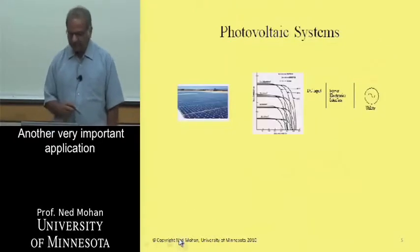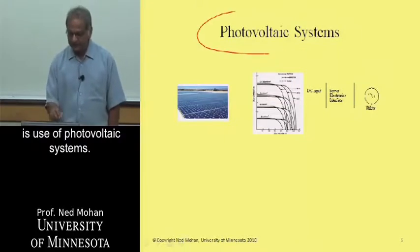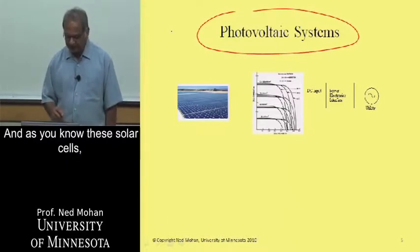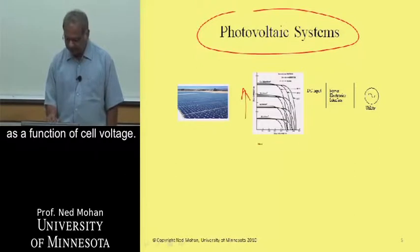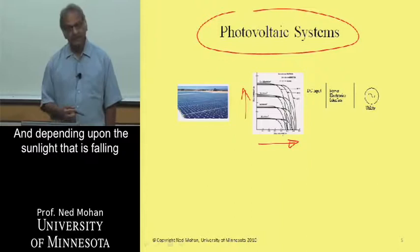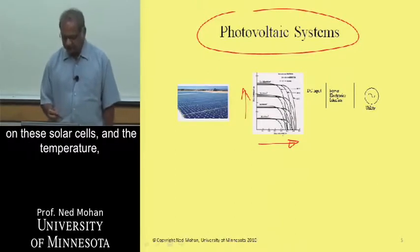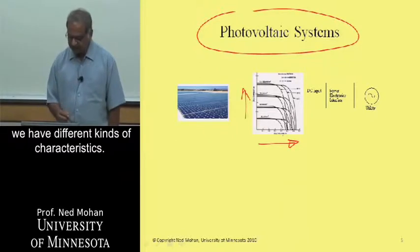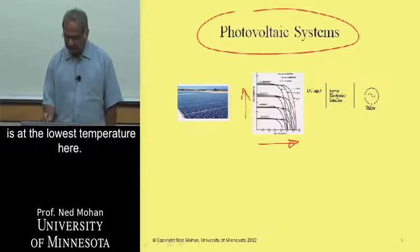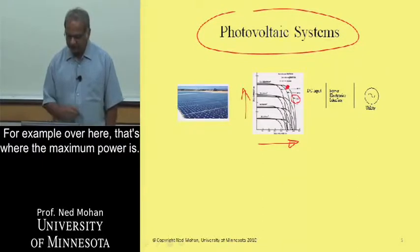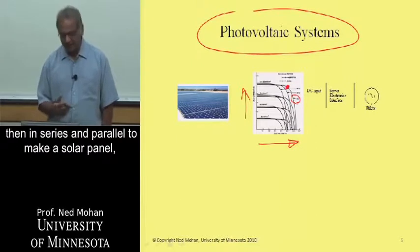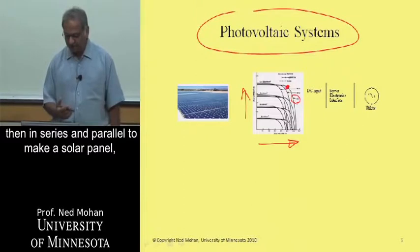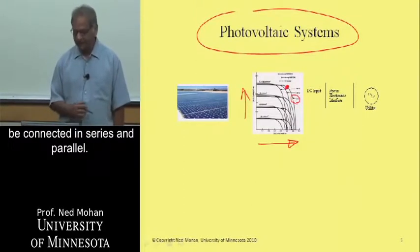Another very important application for renewables-based electric generation is photovoltaic systems. These solar cells produce a DC output. The cell current is plotted as a function of cell voltage, and depending upon the sunlight falling on the solar cells and the temperature, we have different characteristics. The highest power output is at the lowest temperature, and we would like to operate at the knee of these characteristics — that's where the maximum power is. Many solar cells are connected in series and parallel to make a solar panel, and those panels may be further connected in series and parallel.